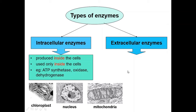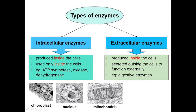The second type of enzyme is extracellular enzymes. They are enzymes that are produced inside the cells but they are secreted outside the cells to function externally. For example, the enzyme trypsin that is produced by the pancreatic cells and secreted into the duodenum to break down polypeptides.